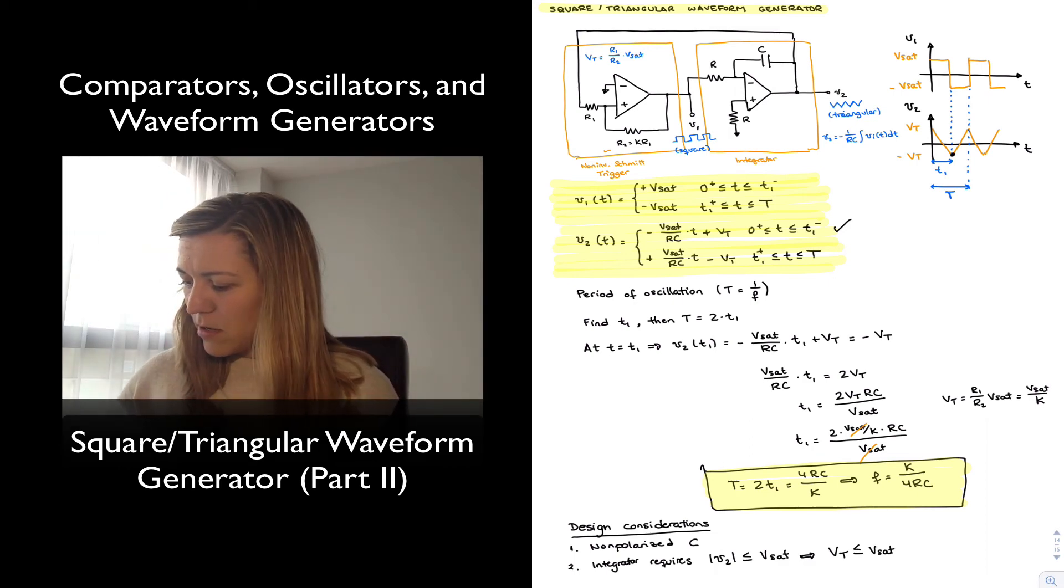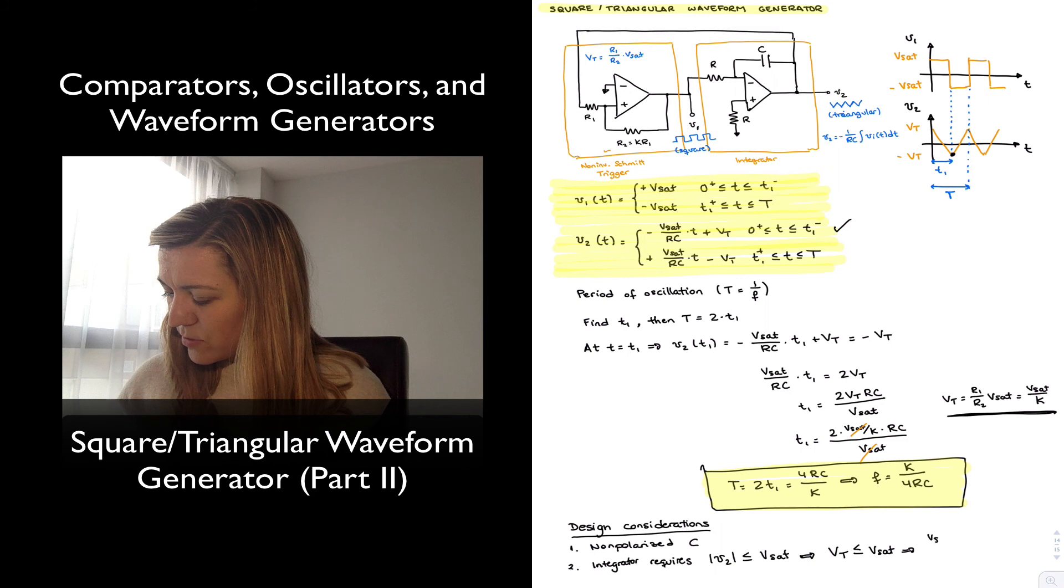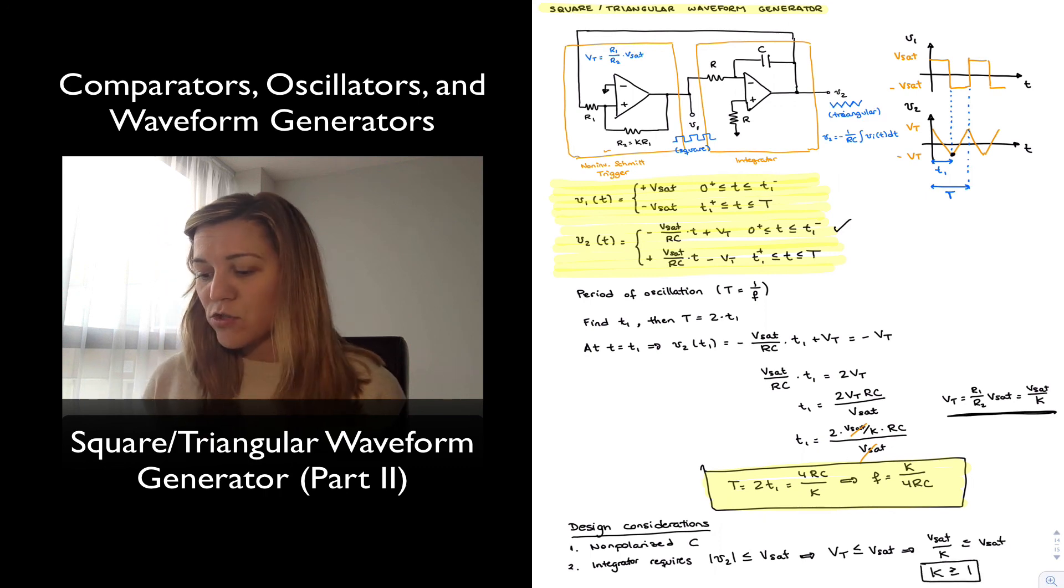And vT, we've come up with an expression for it already, is equal to R1 over R2 times vSat, or vSat over K. It means vSat divided by K needs to be less than or equal to vSat, which basically means K needs to be greater than or equal to 1. So that's an important design consideration.